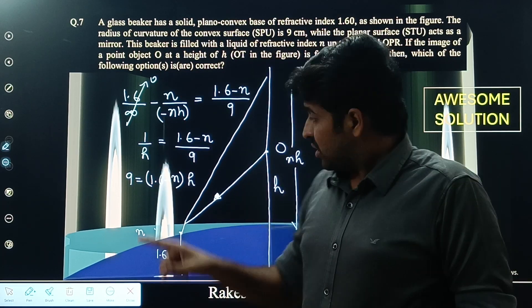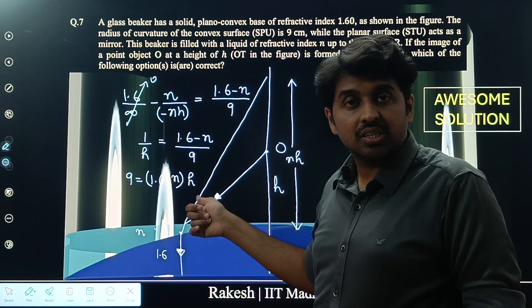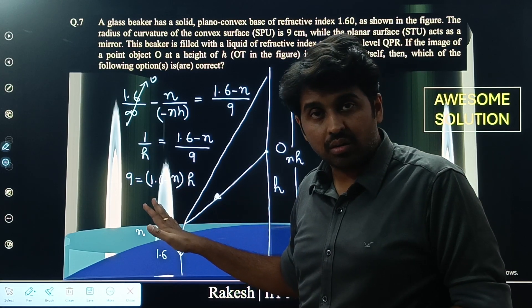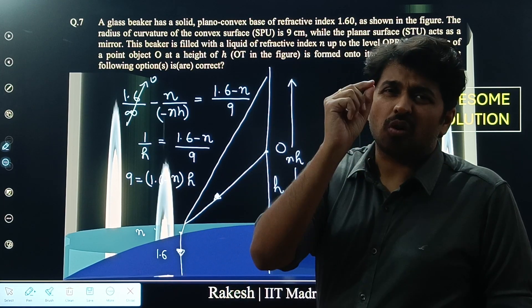There are four options. We just plug in the options of n and h and see whether it is right or wrong. Isn't this awesome?